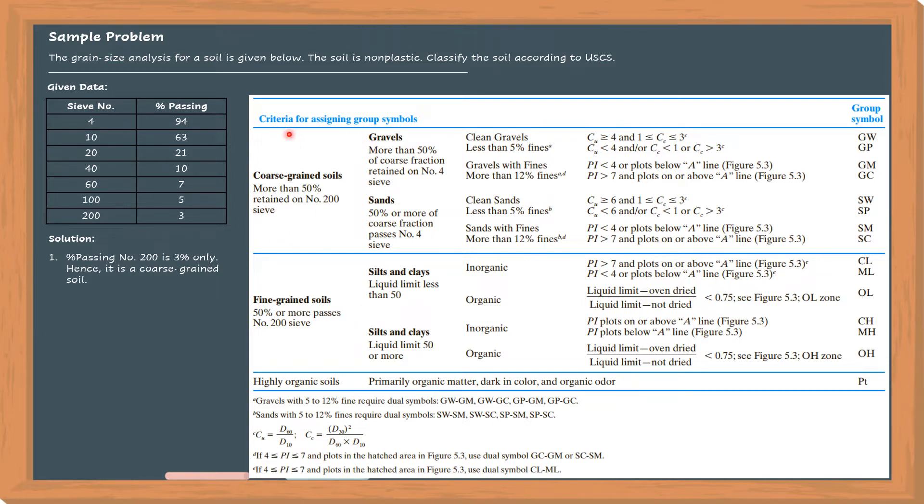So we're at the top - this is the only portion we'll use. The soil is either GW, GP, GM, GC, SW, SP, SM, or SC. Next, the percent passing number 4 is 94%, hence it is sand. For gravel, more than 50% of coarse fraction must be retained on number 4, but if 50% or more of the coarse fraction passes number 4, then this is sand. Therefore, our option now reduces to SW, SP, SM, and SC.